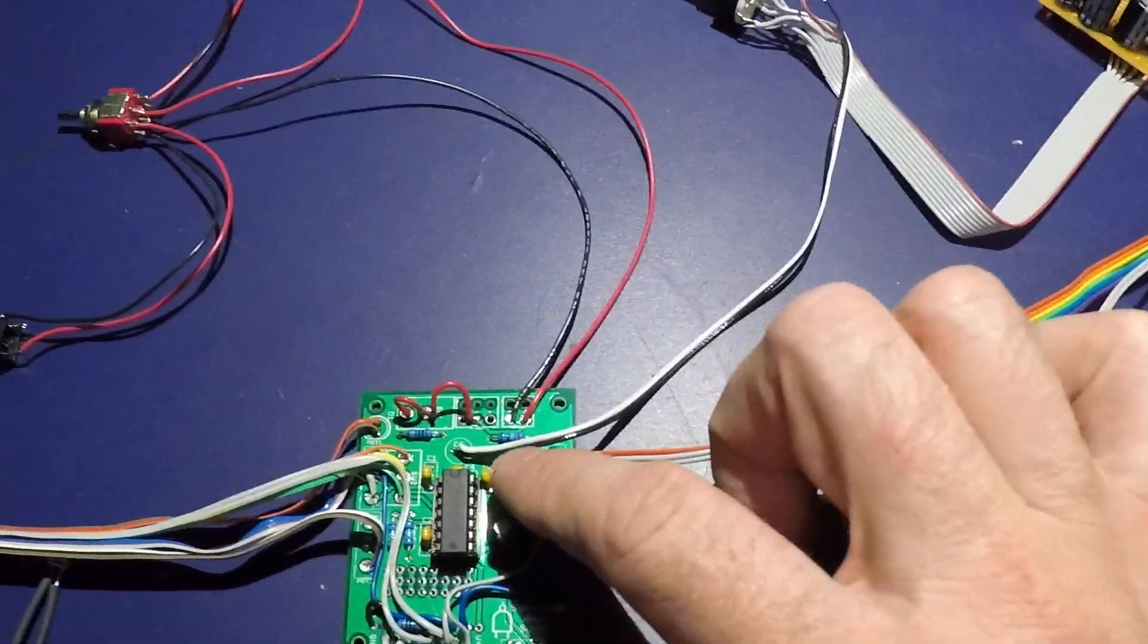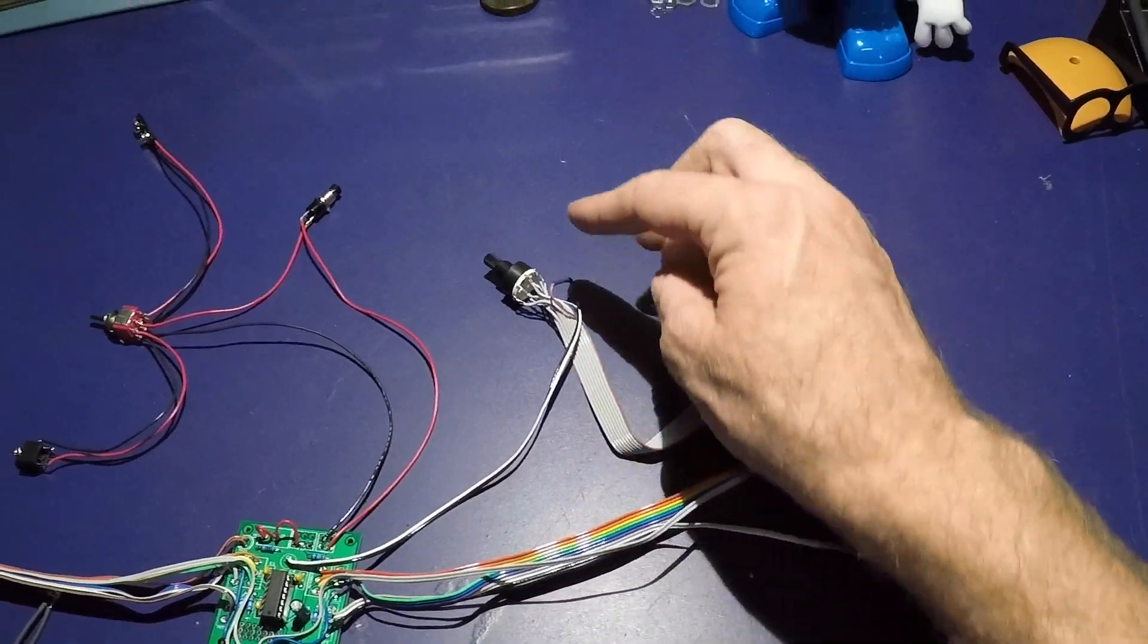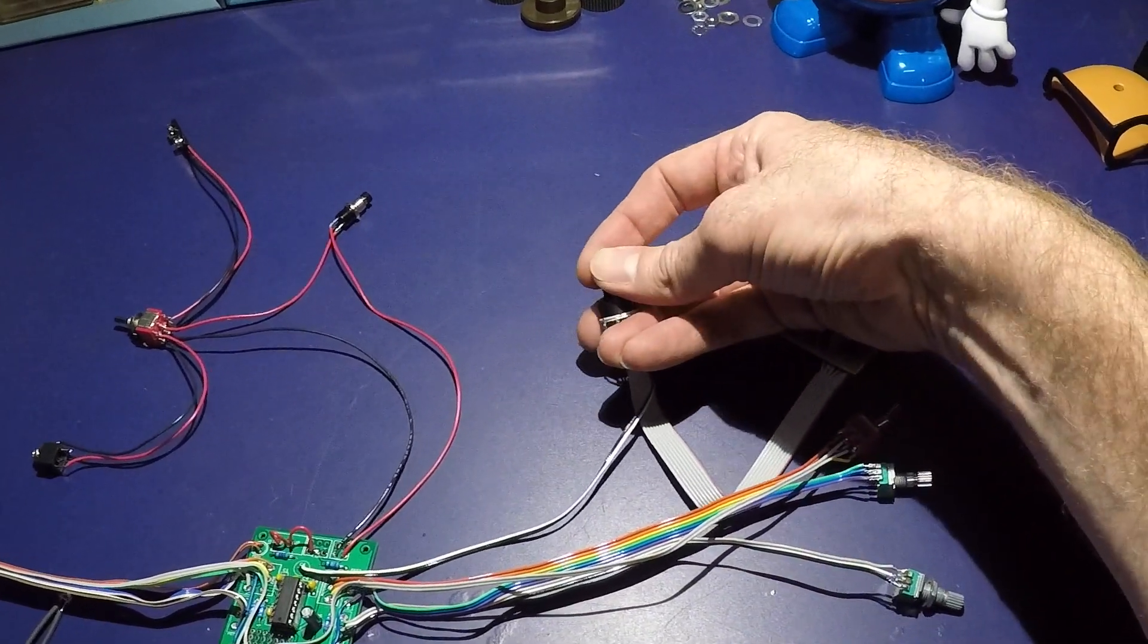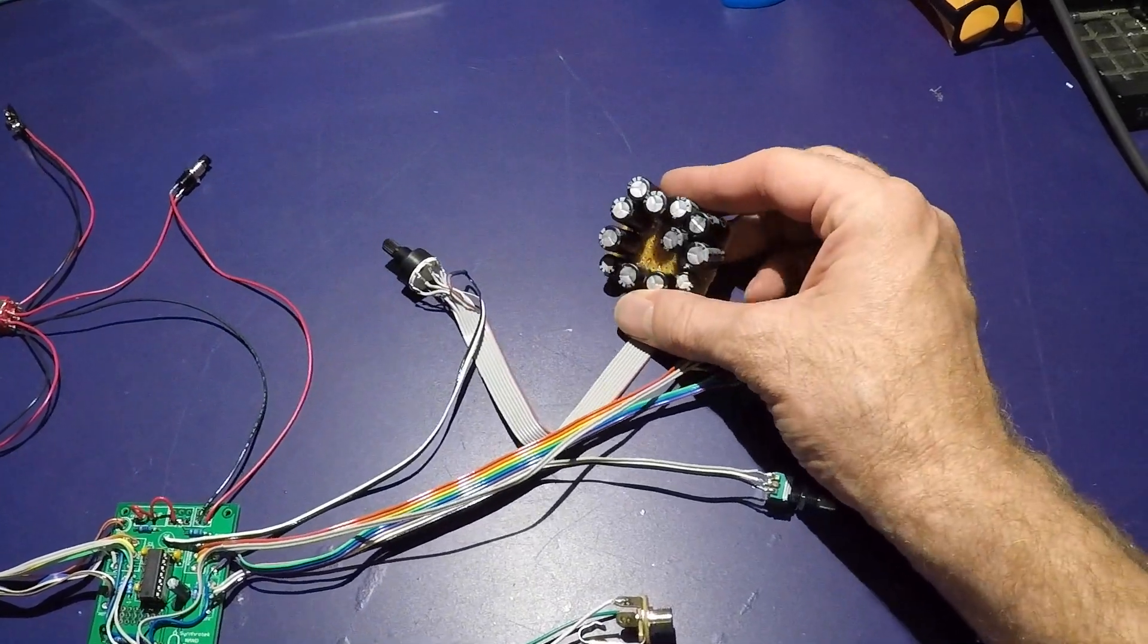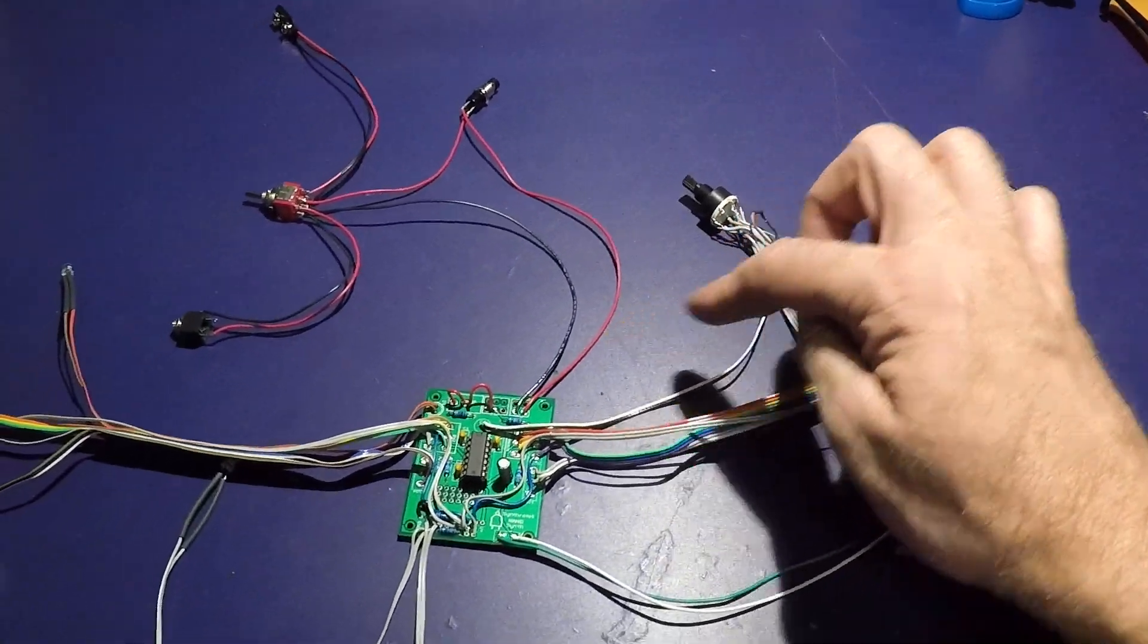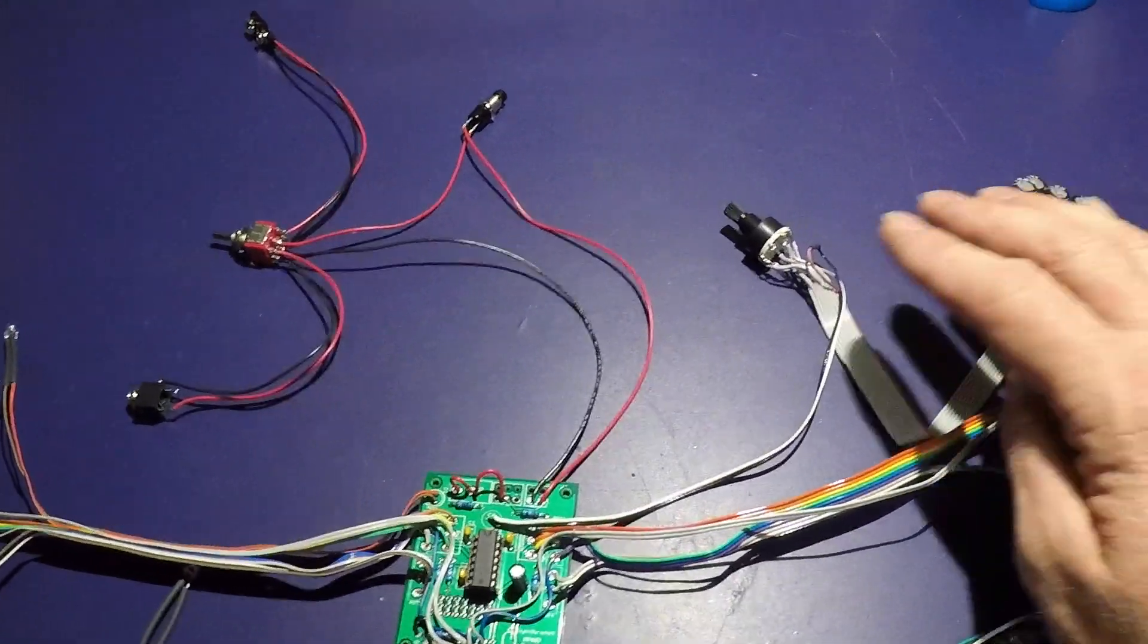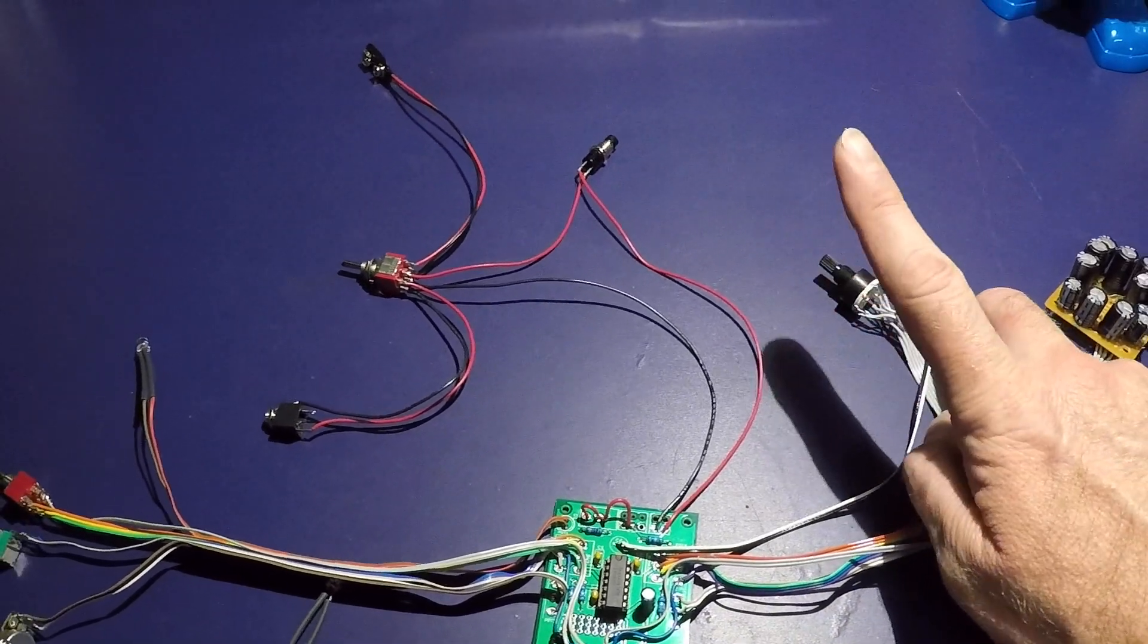I replaced capacitor C6. I ran that out to an eight position rotary switch, which then runs out to my little board here. My capacitor board has eight different values. So this will give it eight different dive bomb settings, which are activated when you cut power.